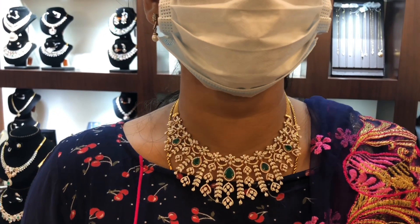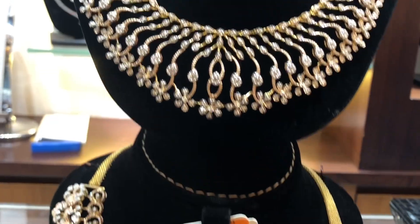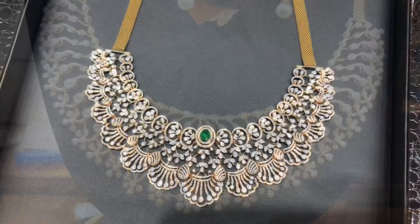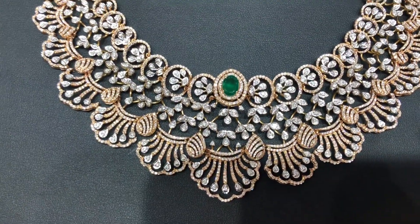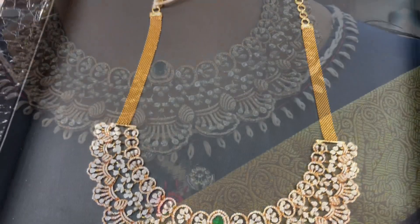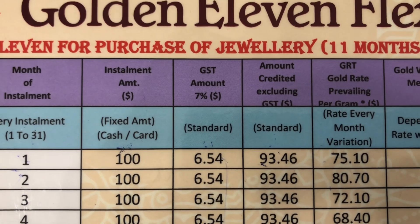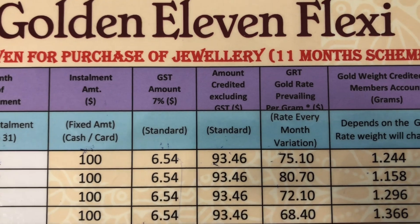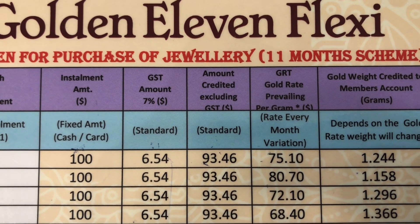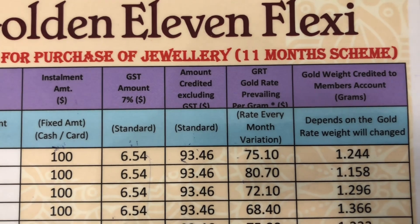That is the benefit of gold schemes. Even if you look at it casually, gold rates are never constant — they keep changing. By joining a scheme, you get the benefit of monthly averaging. It also helps with budget planning — instead of paying a large bulk amount at once, you pay small amounts monthly, which feels more comfortable.